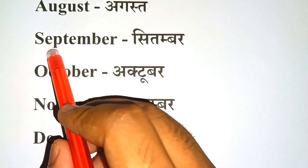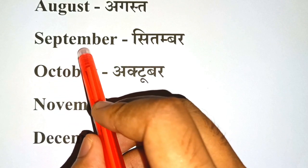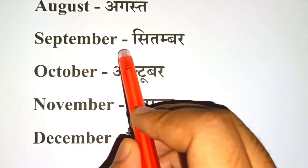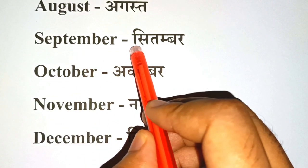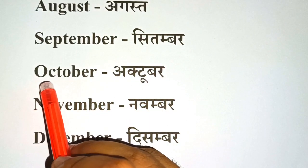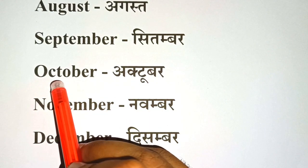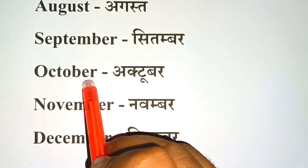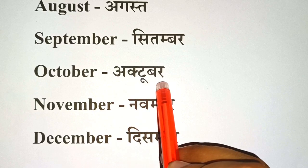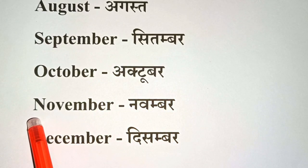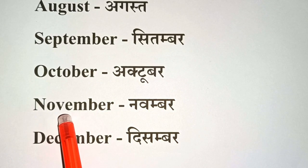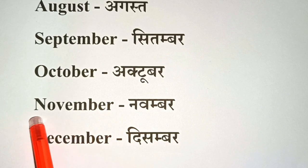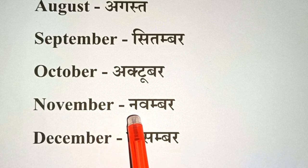S-E-P-T-E-M-B-E-R. September. September means September. O-C-T-O-B-E-R. October. October means October. N-O-V-E-M-B-E-R. November. November means November.